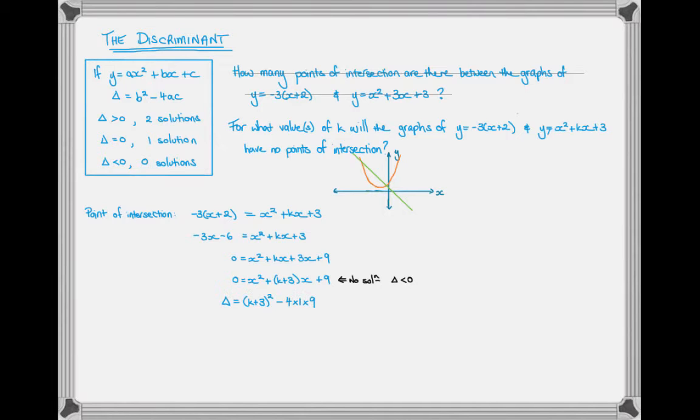What I want to do is find the discriminant, which is b squared minus 4 times a times c, and set that to be less than 0. If you saw one of my earlier videos, you would know that when we're solving inequations, or in particular quadratic inequations, we must be doing this graphically.